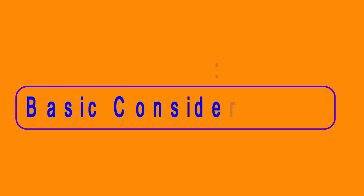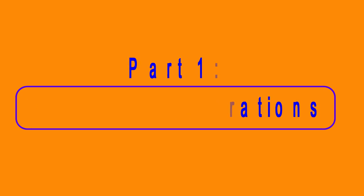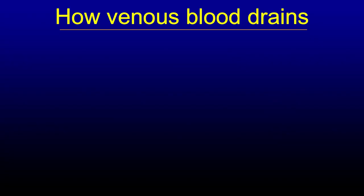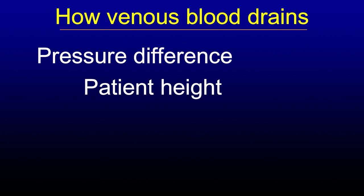The first part covers the basic considerations one has to know prior to understanding the venous drainage aspects of Cardiopulmonary Bypass. How does venous blood drain? It drains by the difference in pressure — blood always flows from a higher pressure to a lower pressure. So if the patient is at a higher level than the upper level of the blood in the venous reservoir, this difference by itself creates a flow of blood from the patient into the venous reservoir.